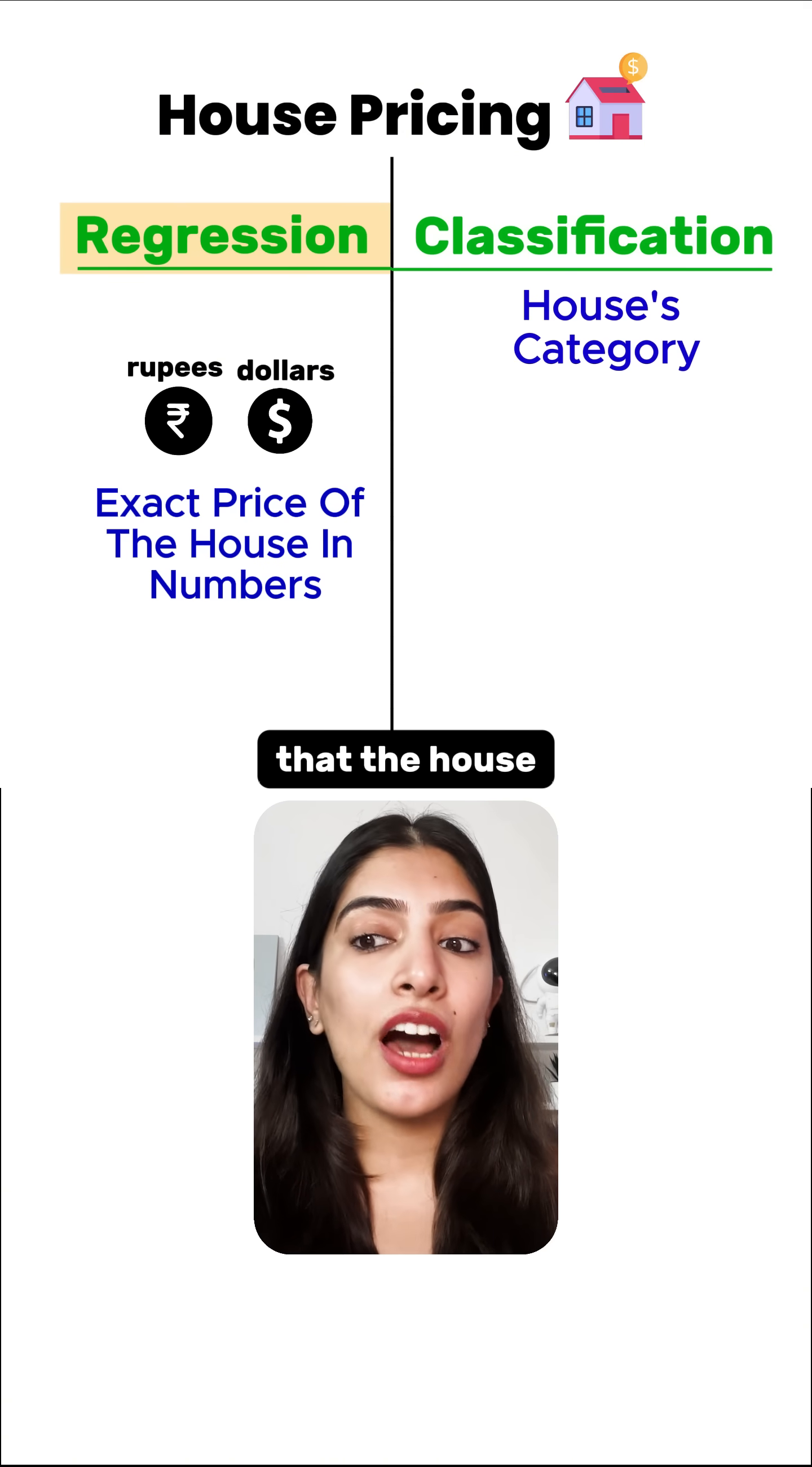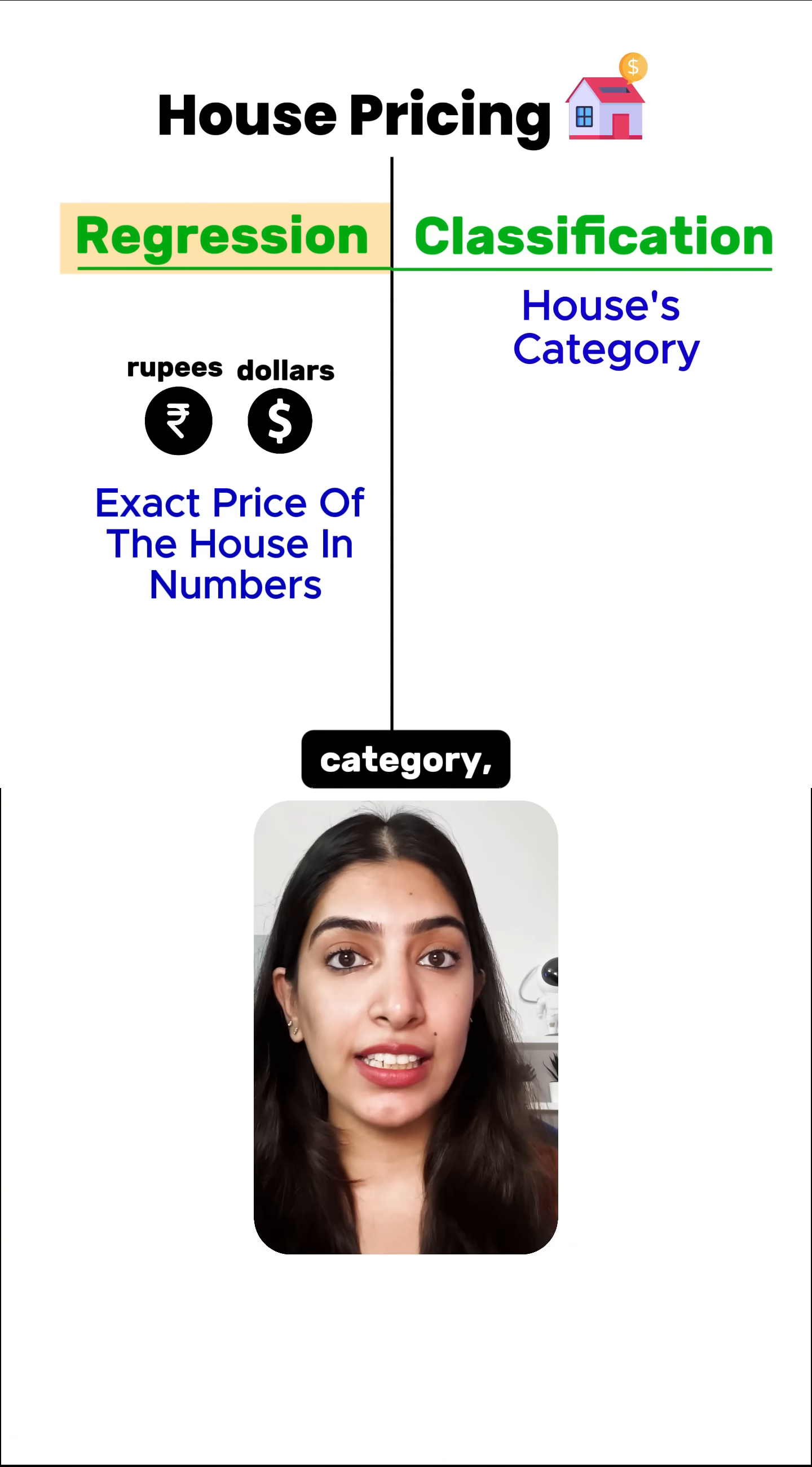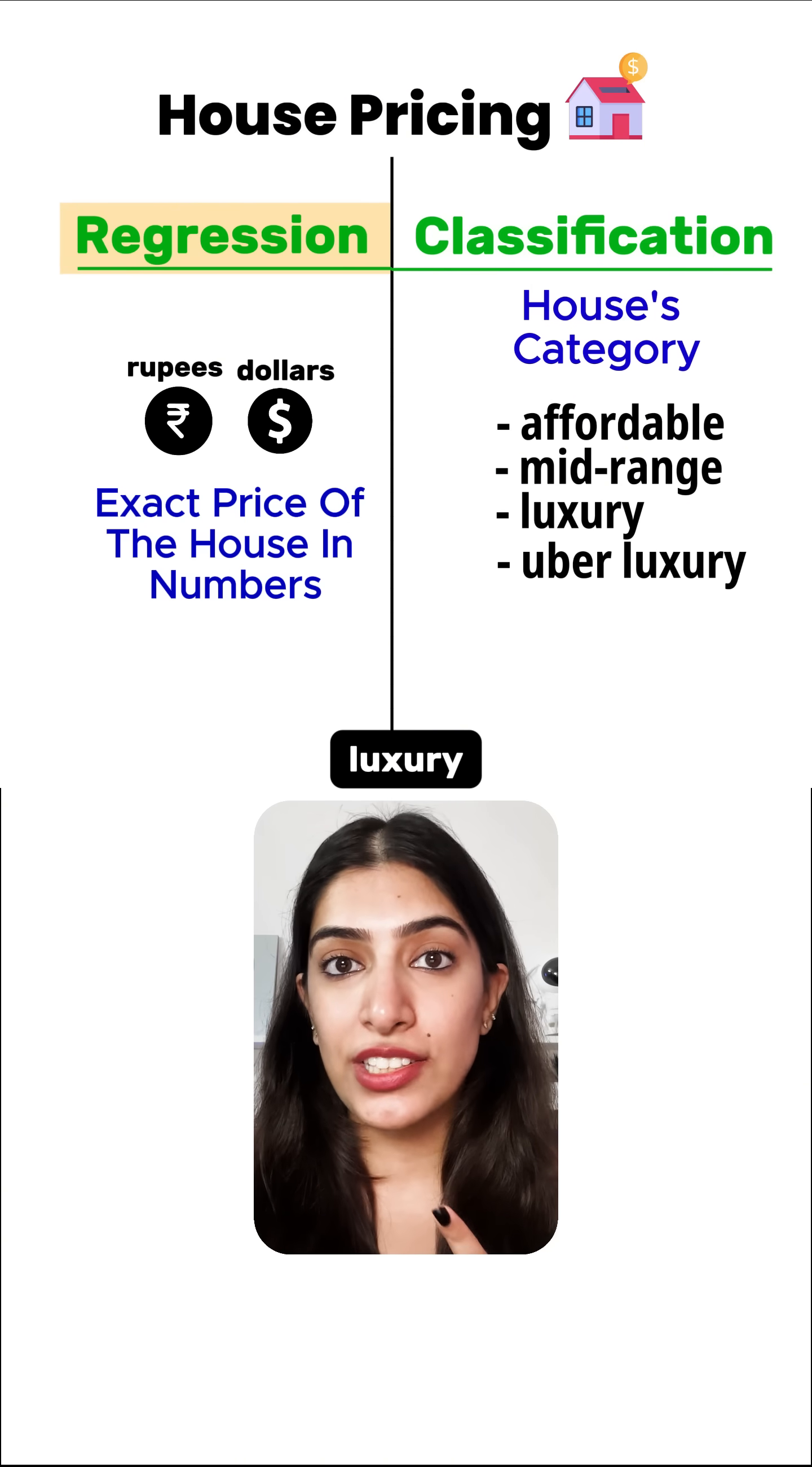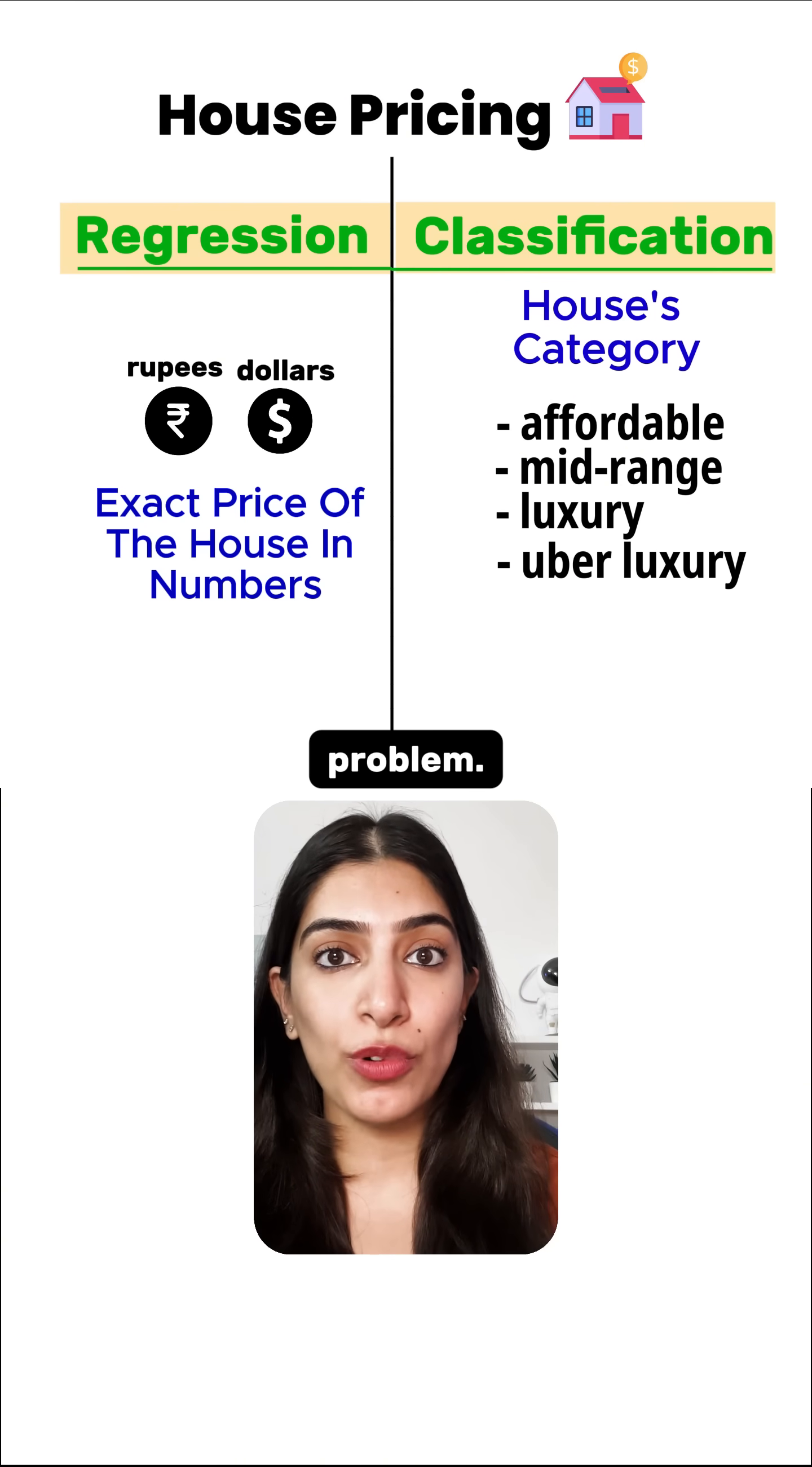Versus if you are just predicting that the house is going to belong to which category, you are just classifying it into affordable, mid-range, luxury, or uber luxury category, then it is a classification problem.